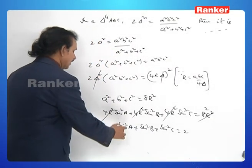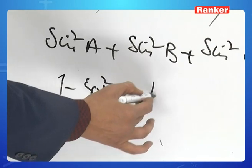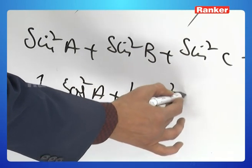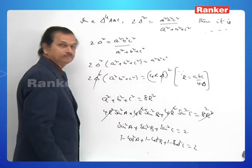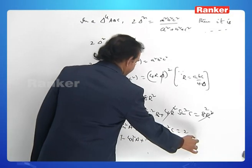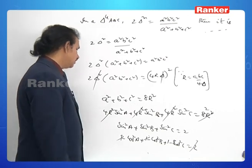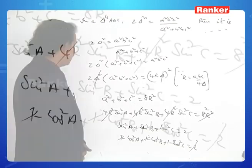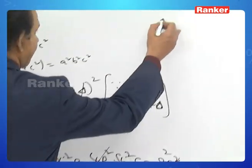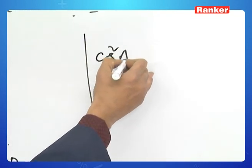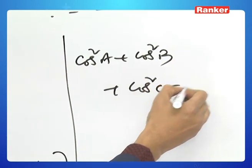Rewriting: (1 − cos²A) + (1 − cos²B) + (1 − cos²C) = 2. This simplifies to cos²A + cos²B + cos²C = 1.